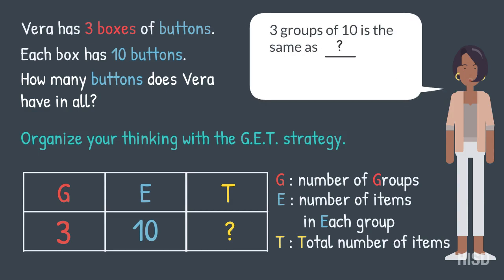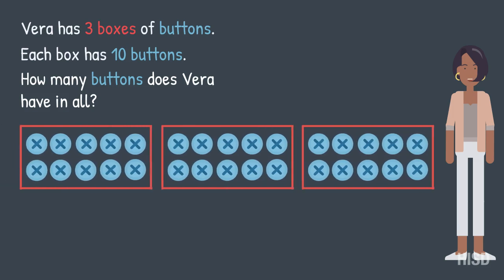Three groups of ten is the same as what? Three times ten equals what? Let's draw out what we know as a picture.